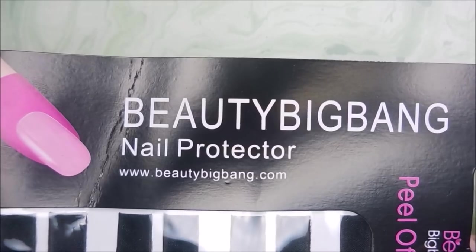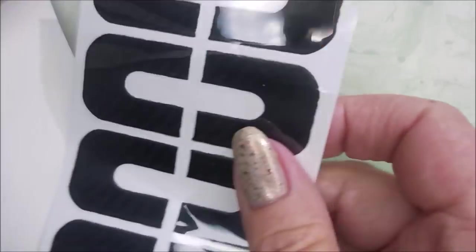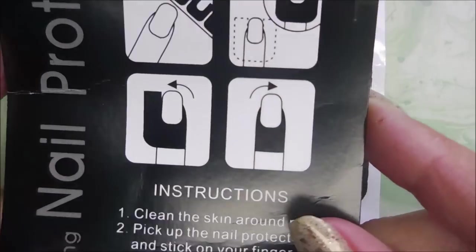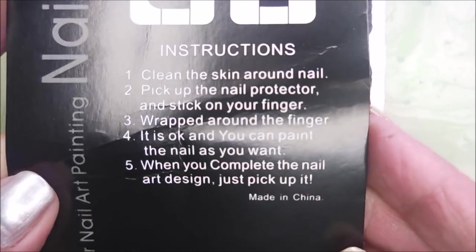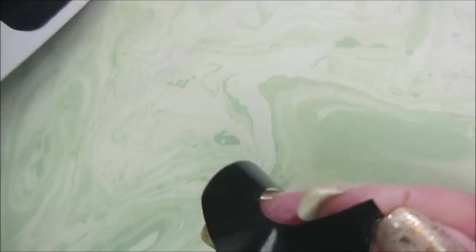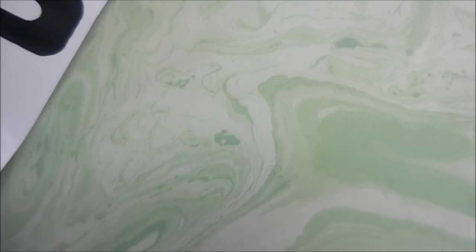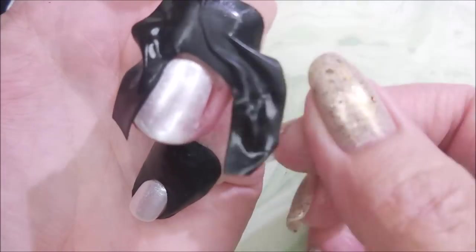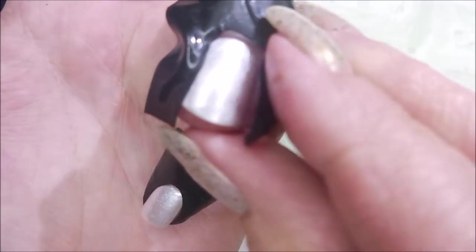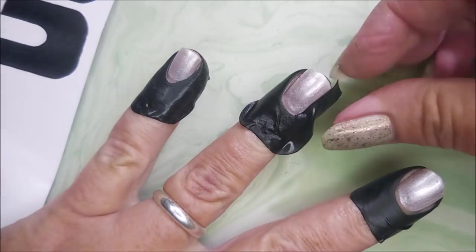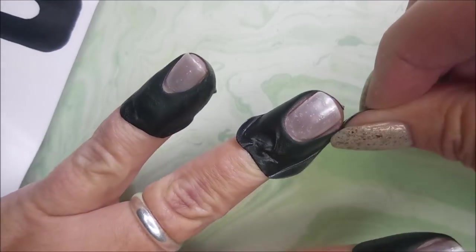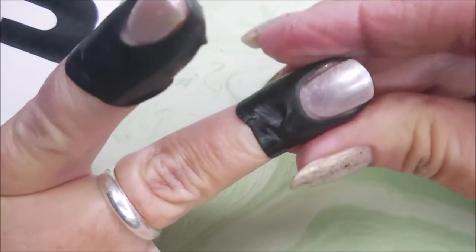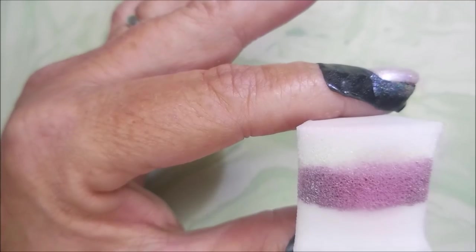I'm going to be using these Beauty Big Bang Nail Protectors or Peel Off Nail Tape today. And they've got instructions on the back. I will leave a link for these down below if you're interested. And I'm only going to show me struggling getting one of these on. I just kind of plop it down by the cuticle and then just kind of peel and pull and work it around. They are tricky to get on, but they really do get up close to that nail. So if you're doing something real messy, they're great.